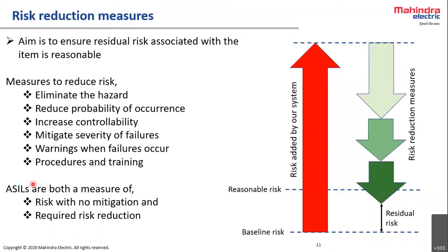In summary, ASILs are both a measure of risk with no mitigation and a measure of required risk reduction. If you add a function to a system, risk is added. By taking any of these risk reduction measures, you can reduce the risk and try to bring it to a reasonable level.